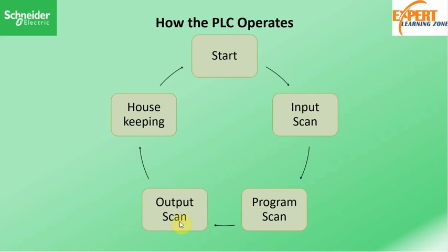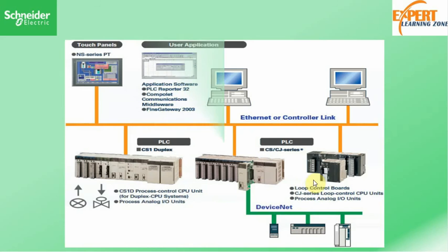When the logic is computed and based on how the PLC has been programmed, the results are written to the output — that's what we call the output scan. We are now writing to field devices and output devices based on the results of the computation by the CPU. After that, the CPU performs some housekeeping: diagnostics like checking of communication, checking of the programming terminals, and some internal functionality. Thank you very much and see you in the next video — please like, share, comment and subscribe.